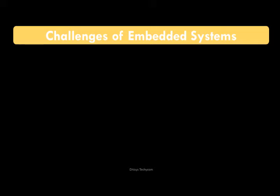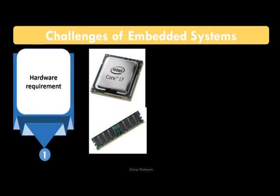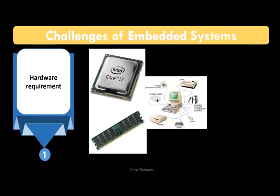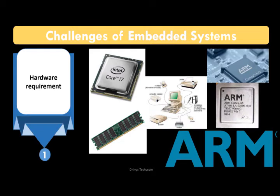The first important challenge of embedded systems design is hardware requirements. Embedded systems include many different types of hardware such as memory, processors, and peripheral chips. For example, if you are using ARM processors, there are many different types like ARM7, ARM9, ARM11, and ARM15. Choosing the right hardware for your application is what the hardware requirement challenge is all about.